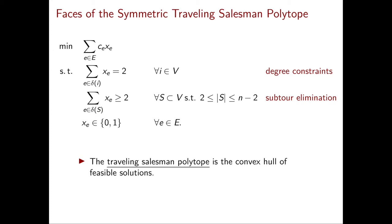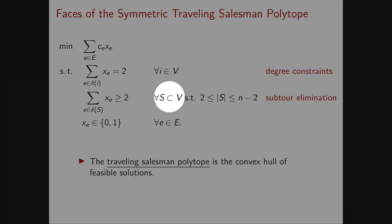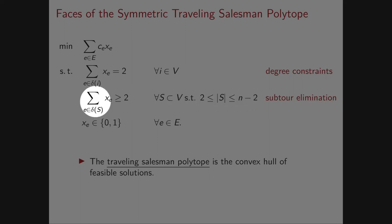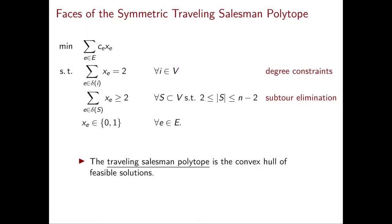And then we have the subtour elimination constraints, which we discussed at length in section 2. For every subset of nodes with cardinality between 2 and n-2, we have that the sum of all the variables of the edges in delta of S is greater than or equal to 2.